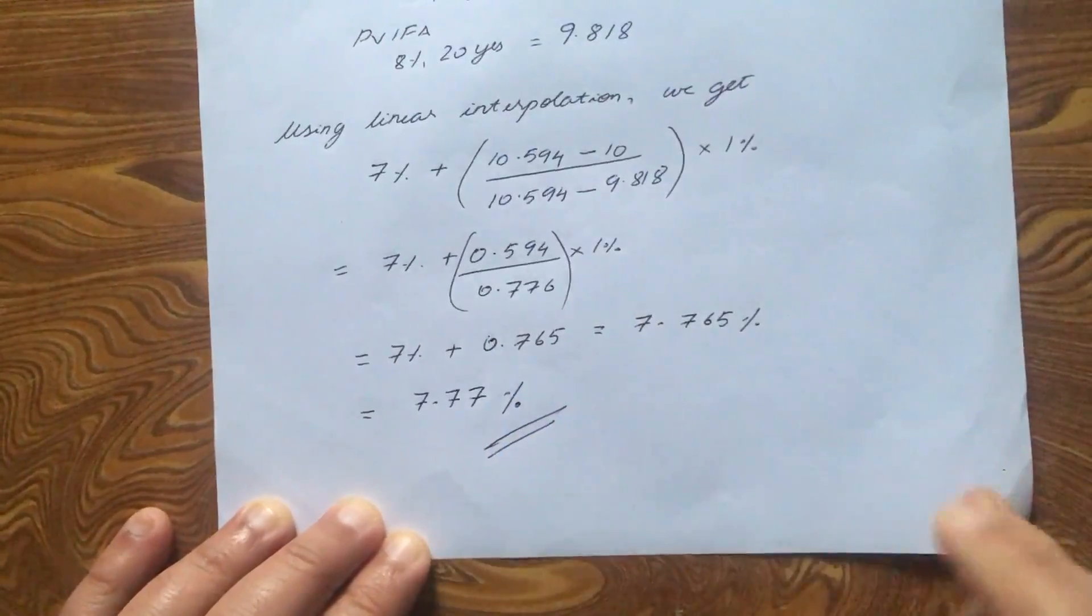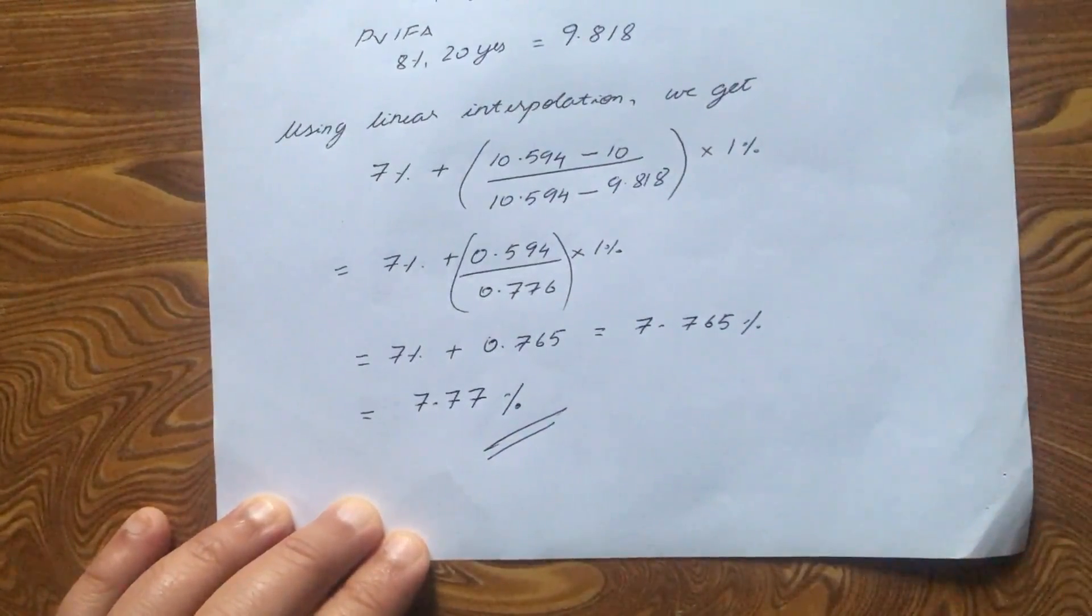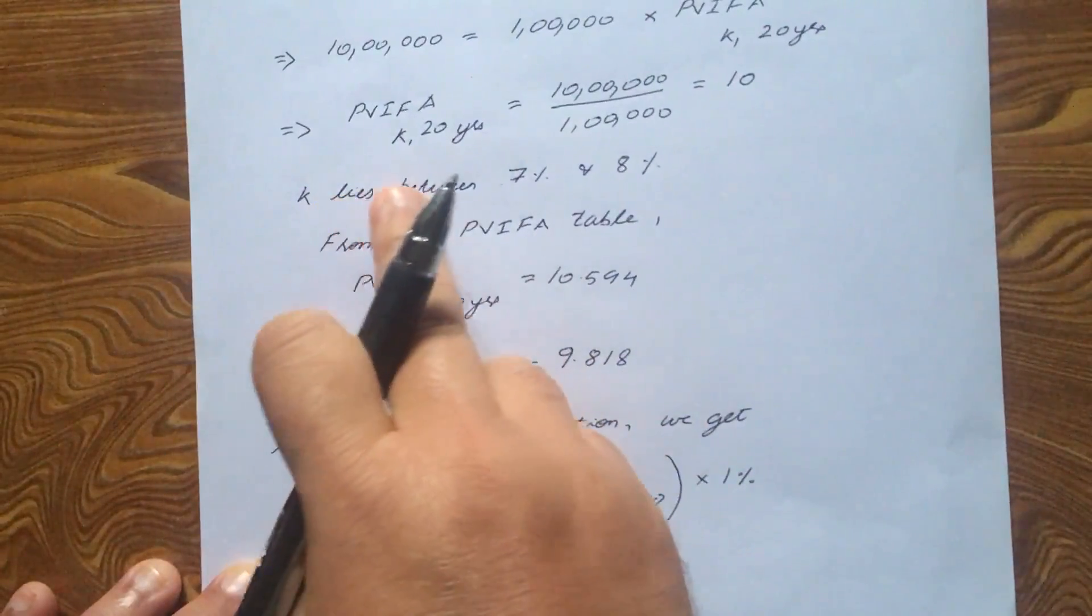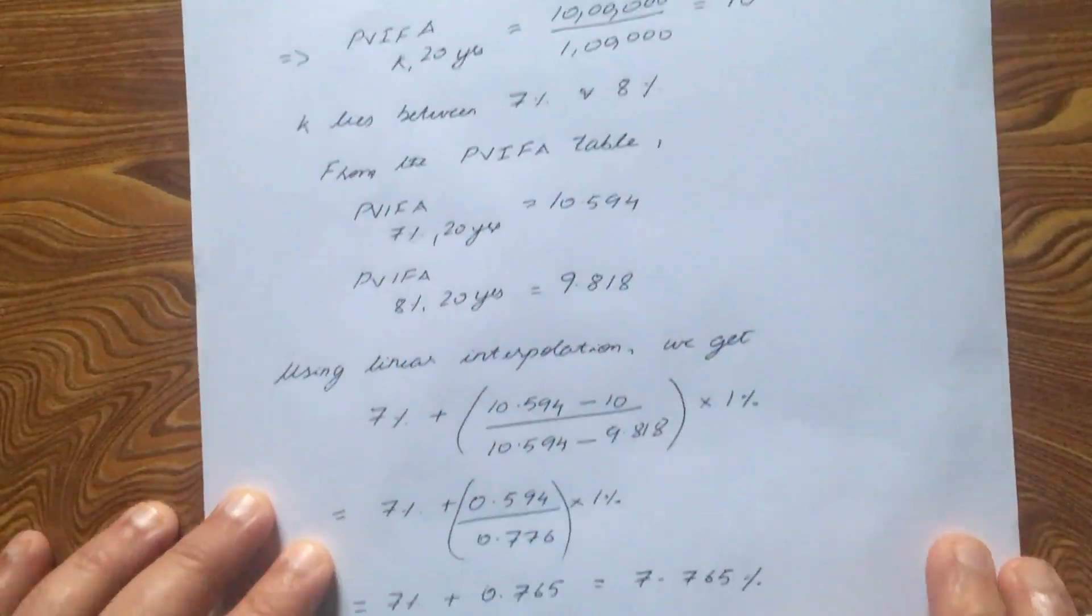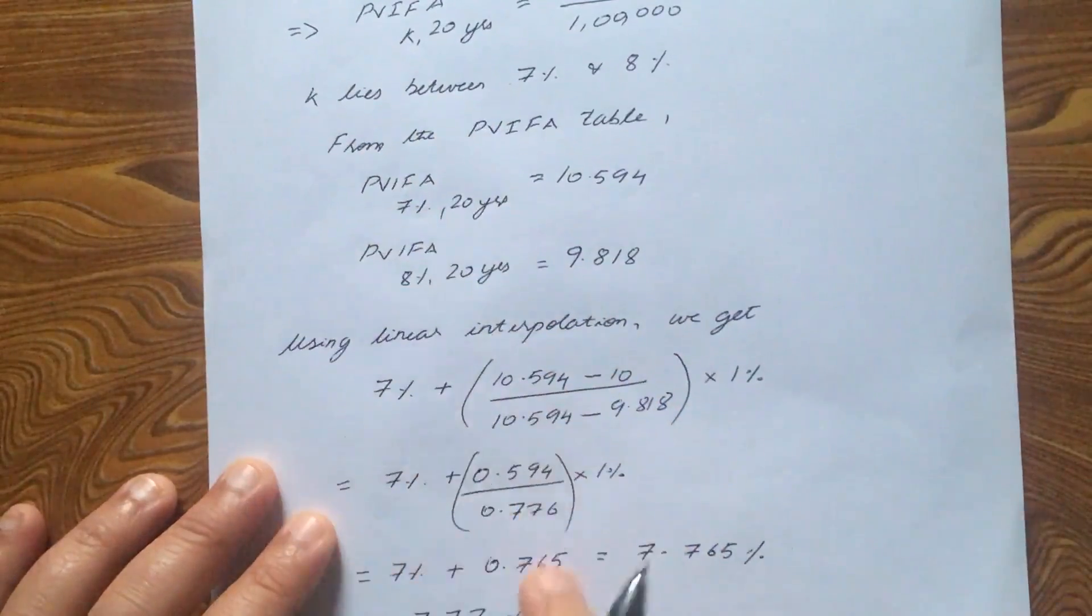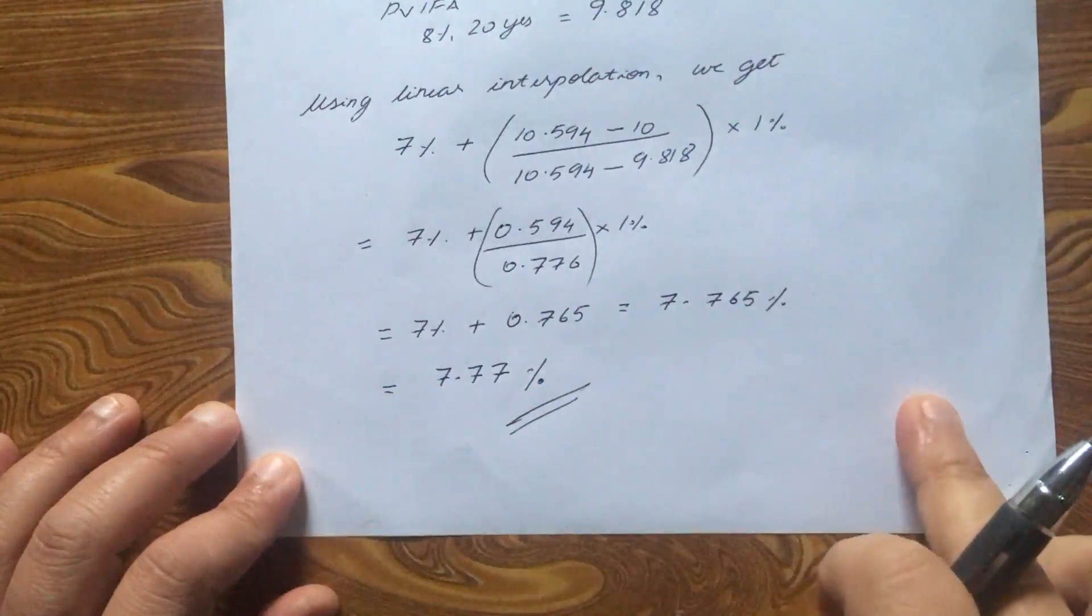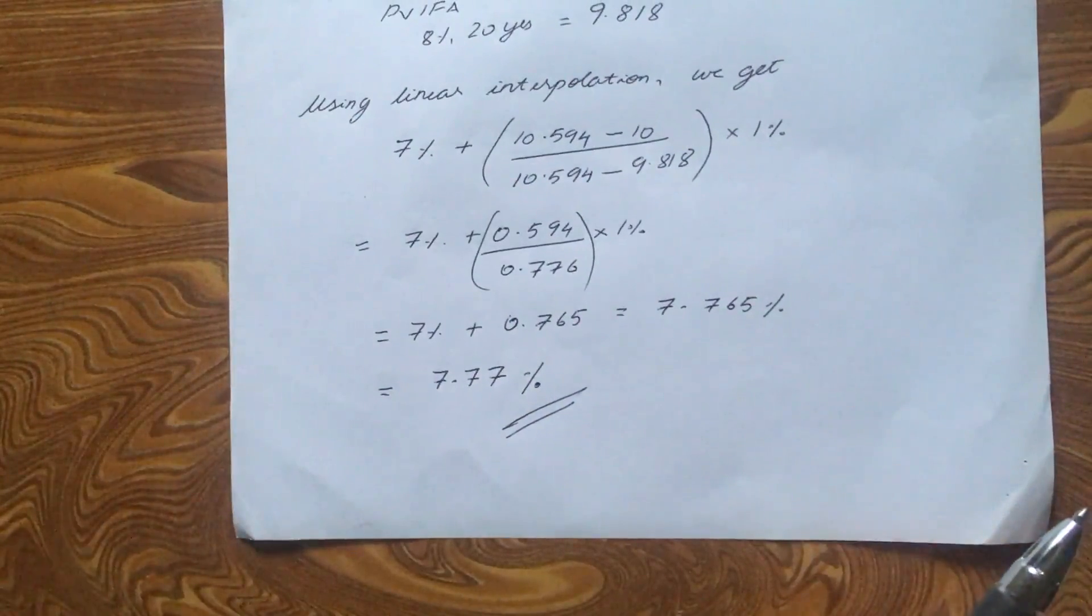So, that is your rate of interest. Now, we know that the rate of interest lies between K lies between 7% and 8%. How do we find out the exact rate of interest? Follow these steps and there you have it. Alright, thank you.